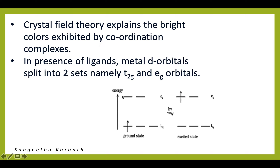Here we can see the octahedral splitting. We have the t2g set and the eg set, and one electron in the ground state gets excited to the eg level in the excited state. When this electron absorbs energy, represented as hν, it gets excited to the eg level. This is the ground state and the excited state.